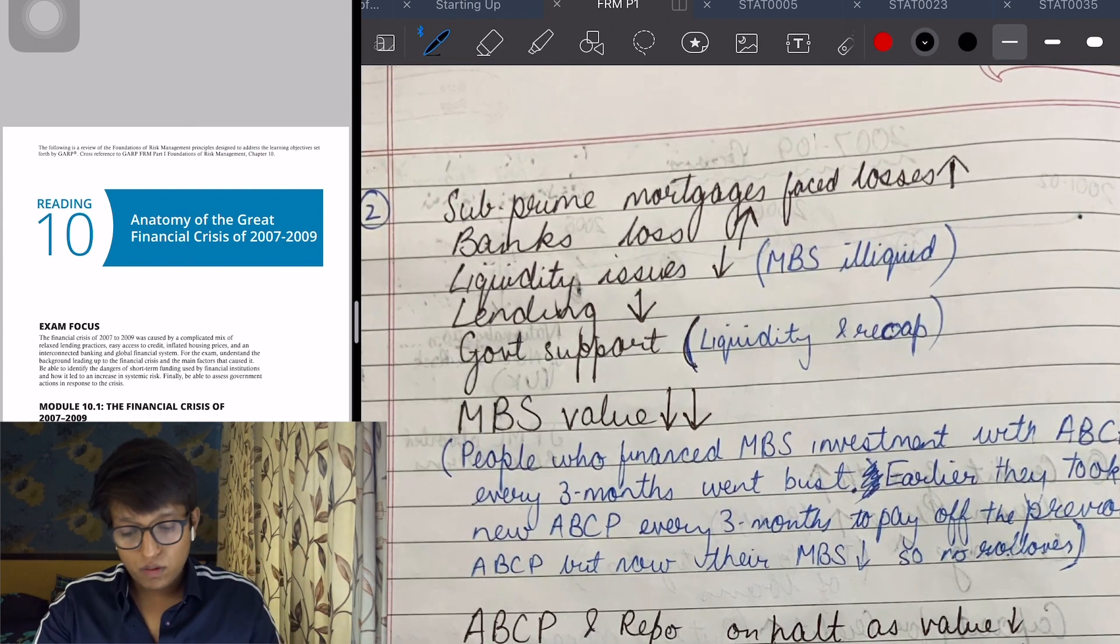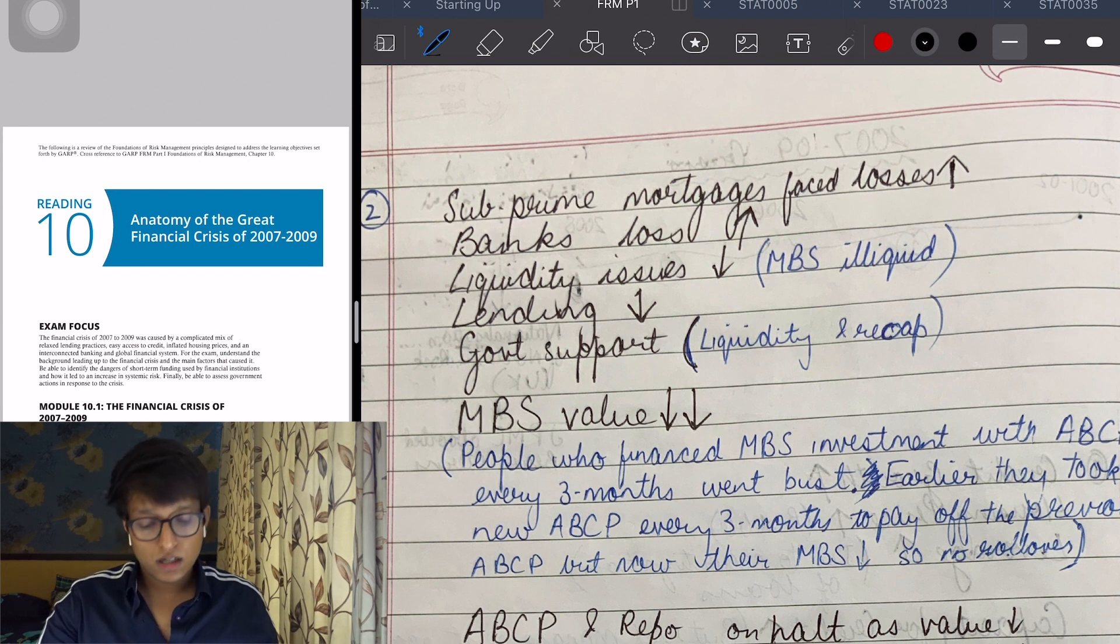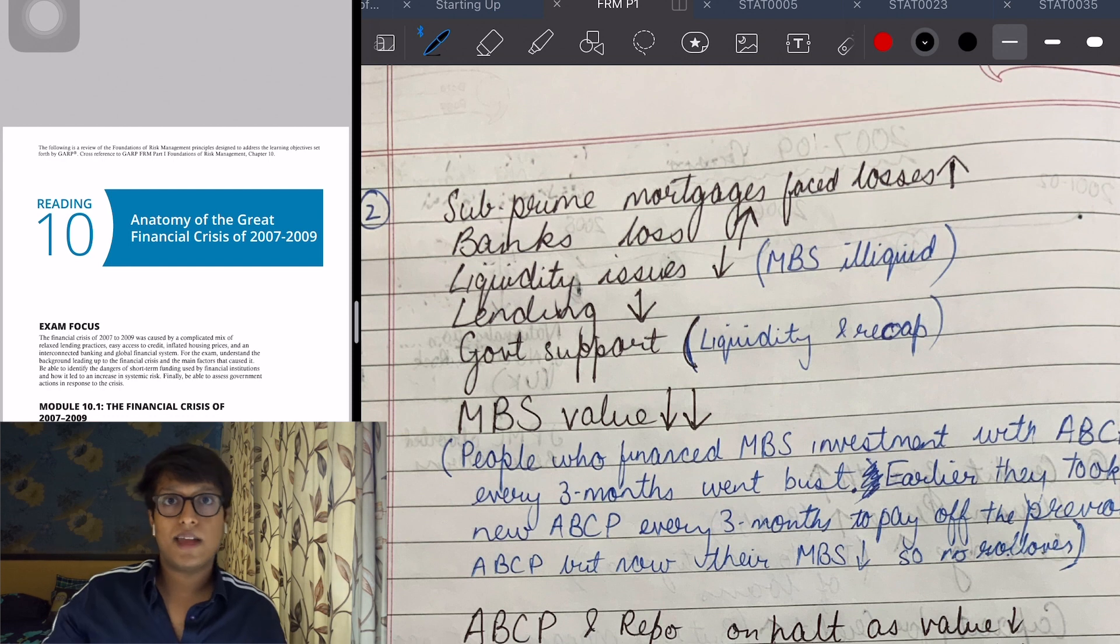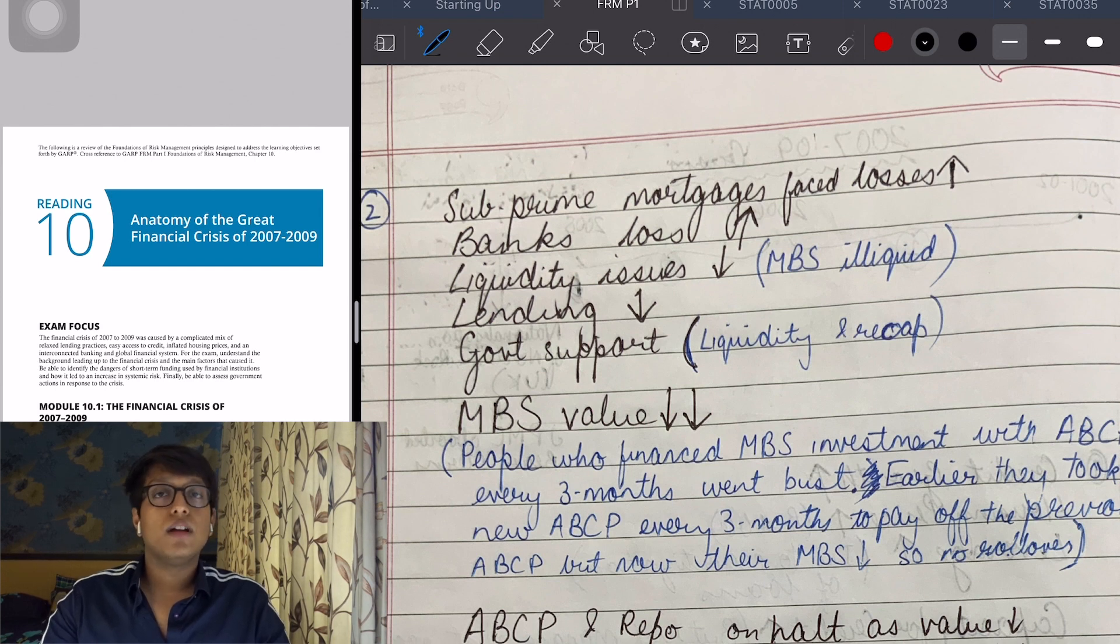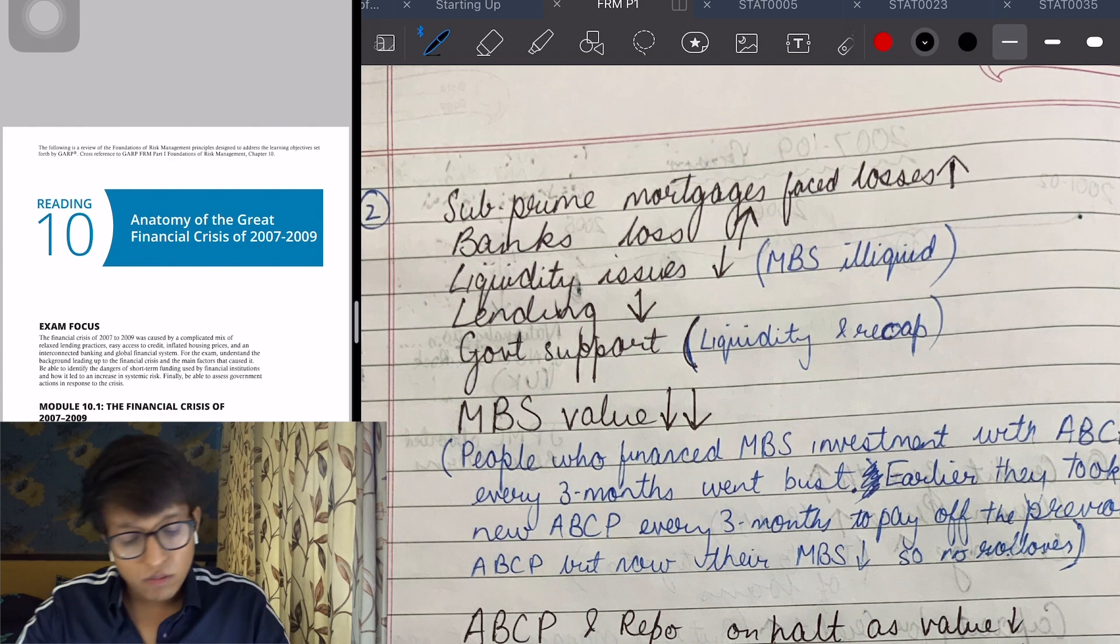Ultimately, the mortgages were facing losses, banks were facing losses, there was a liquidity issue because MBS was illiquid as I'd explained in liquidity risk. Lending was going down because banks didn't want to lend anymore - they had become cautious. And then obviously there had to be government support - they had to ask the Fed for money after they had completely destroyed the system and wiped out five trillion from the world in one day.